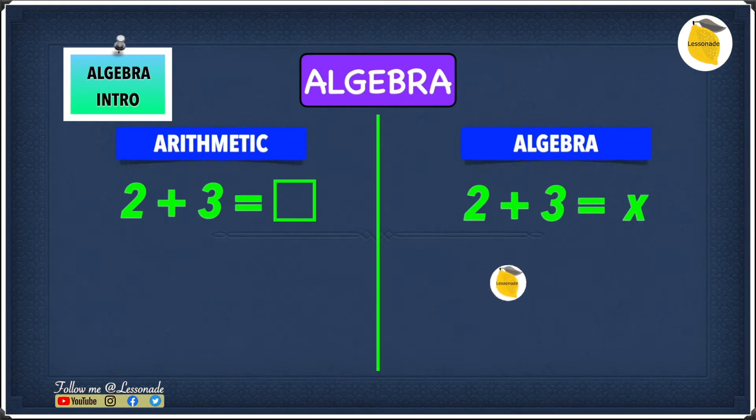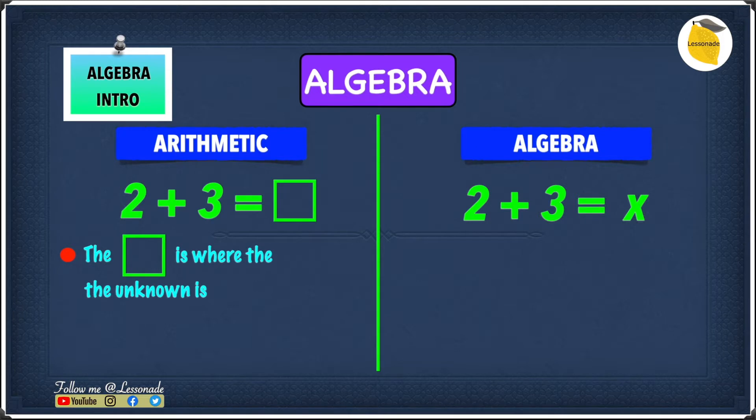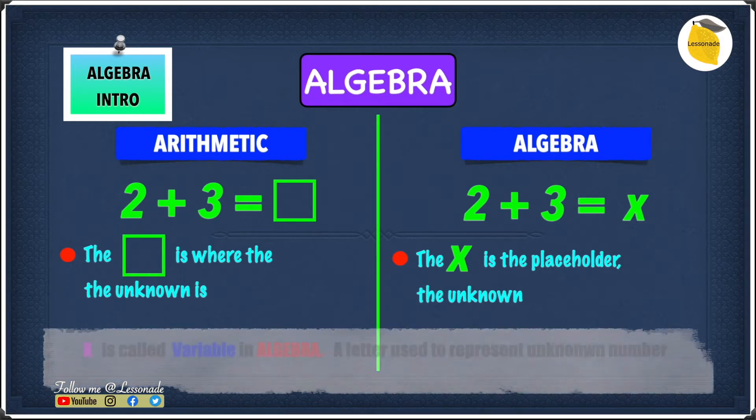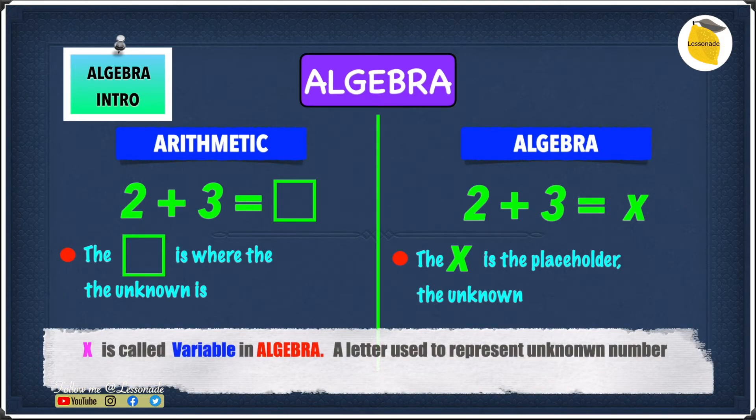So let's start with a comparison between arithmetic and algebra. In arithmetic, we have 2 plus 3 equals blank, and in algebra, we have 2 plus 3 equals x. So in arithmetic, the blank is where the unknown is, and in algebra, the x is the placeholder for the unknown. In other words, the x is where the unknown is.